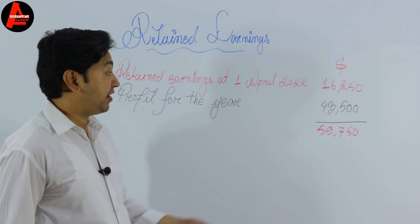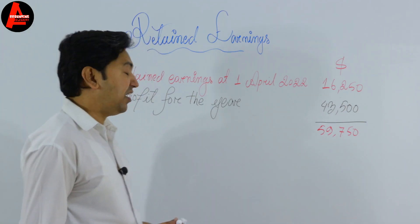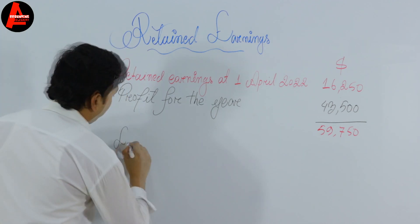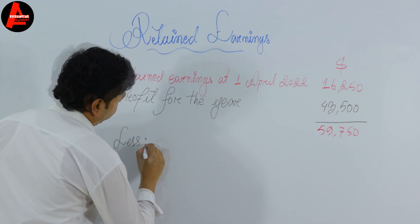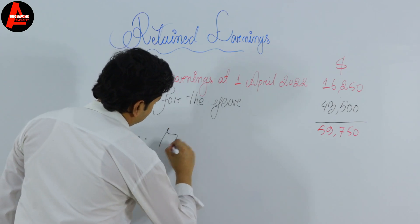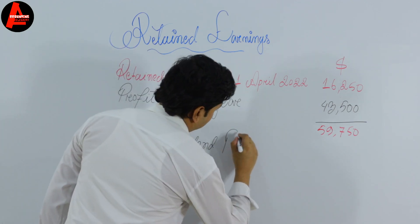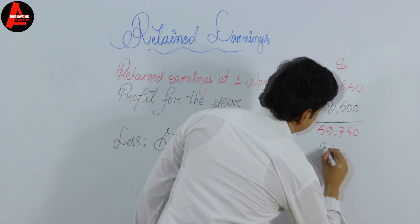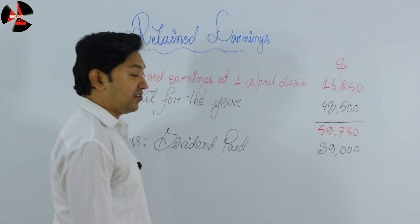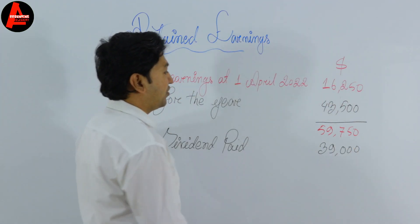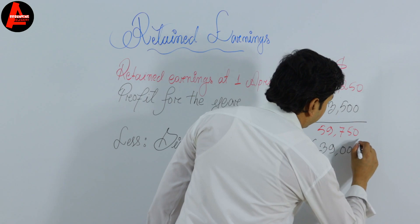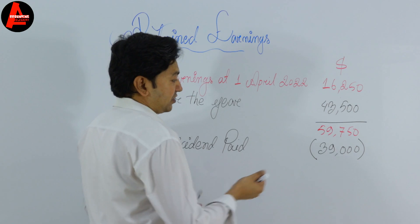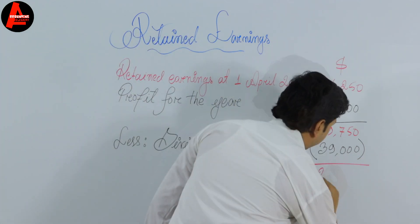We will subtract the dividend paid expense from the subtotal. Less dividend paid: $39,000. Subtracting this amount from $59,750 gives us $20,750.